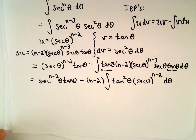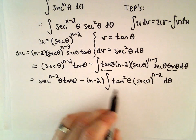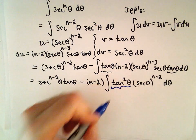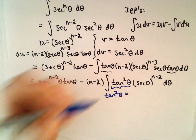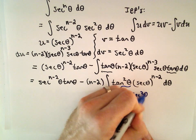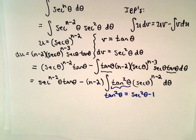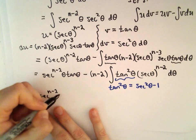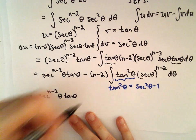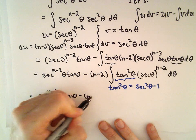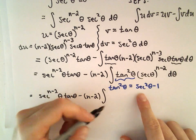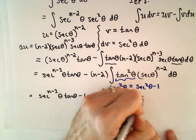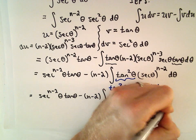At this point we're going to rewrite tan²(θ) using our trig identity, which says tan²(θ) = sec²(θ) - 1. Substituting that in, we've got sec^(n-2)(θ)·tan(θ) minus (n-2) times the integral of [sec²(θ) - 1]·sec^(n-2)(θ)dθ.